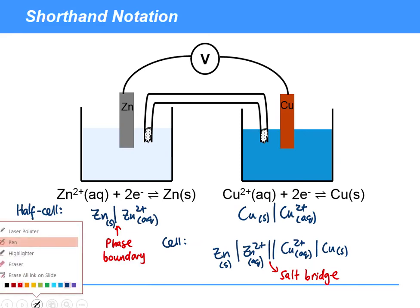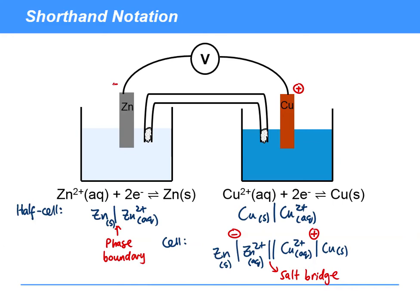Well, it's pure convention. It's simply the fact that we tend to put the more positive half-cell on the right-hand side. Not to say that every diagram you'll see will be like that, but that tends to be the convention that is applied.